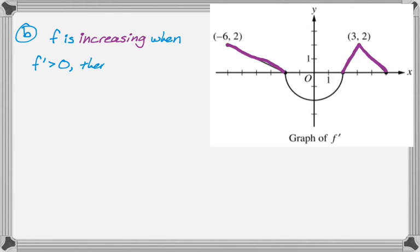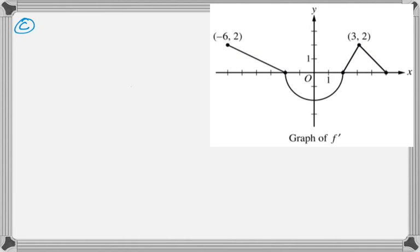Therefore, f is increasing on the intervals negative 6 is less than x is less than negative 2, and 2 is less than x is less than 5. And that's actually the entire problem for that. So let's move on to the next part, which is find the absolute minimum value of f on the closed interval from negative 6 to 5 and justify your answer.